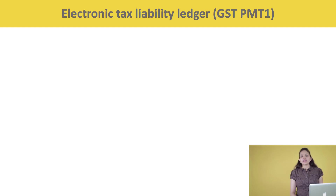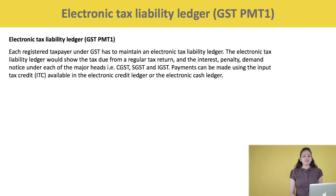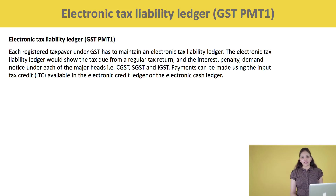The first is the Electronic Tax Liability Ledger. Each registered person under GST has to maintain an Electronic Tax Liability Ledger. It would show the tax due from a regular tax return, and the interest, penalty, and demand notice under each of the major heads i.e. CGST, SGST, and IGST. Payments can be made using the Input Tax Credit available in the Electronic Credit Ledger or the Electronic Cash Ledger.